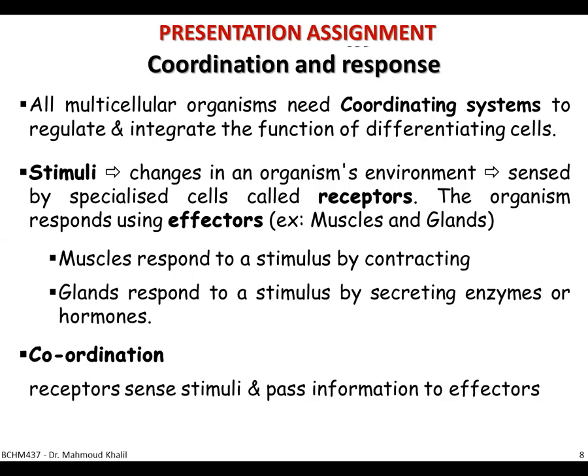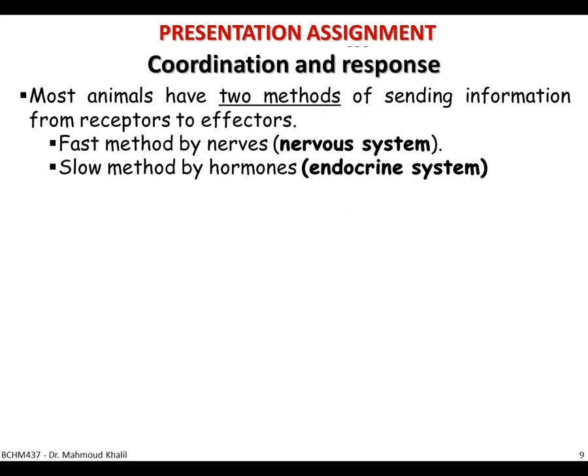Coordination is a very important characteristic of organisms because receptors sense stimuli and pass information to the appropriate effectors. Most animals have two methods of sending information from receptors to effectors: a fast method via nerves — the nervous system — and a slow method via hormones — the endocrine system, which is what we are dealing with in this course.